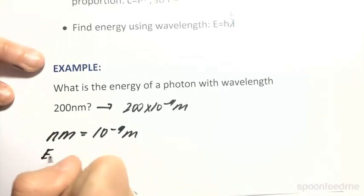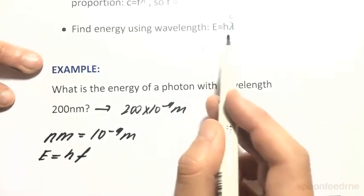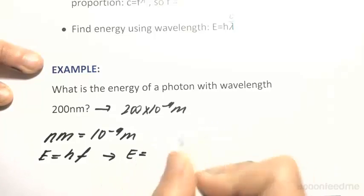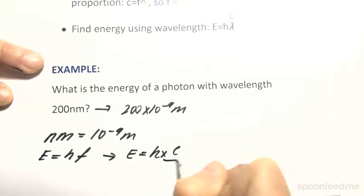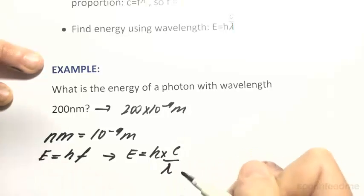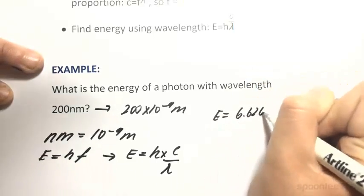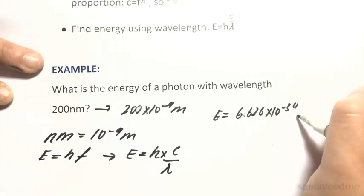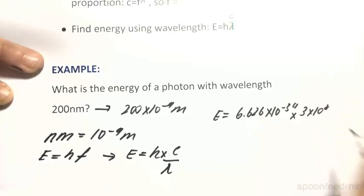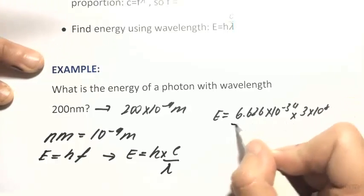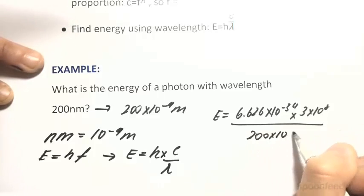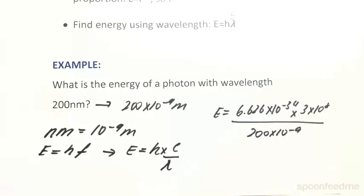We know that energy equals Planck's constant times the frequency. Now we have the wavelength, so let's use this equation. Energy is equal to Planck's constant times the speed of light over the wavelength. In this case, energy will be equal to 6.626 times 10 to the power of negative 34 multiplied by 3 times 10 to the power of 8 all over 200 times 10 to the power of negative 9. If we put these values into our calculator, we'll be able to get a value for the energy of this photon in joules.